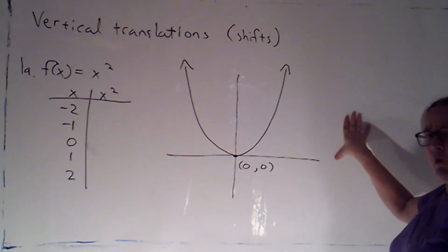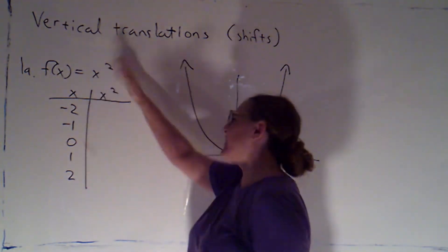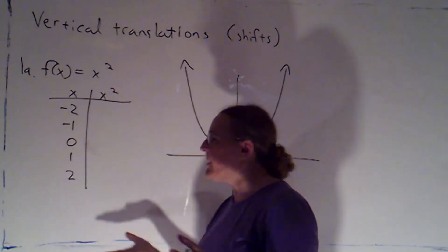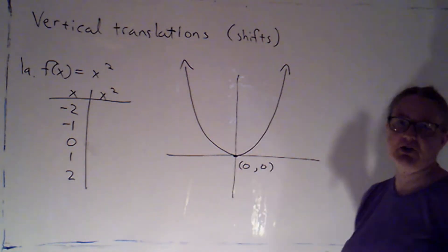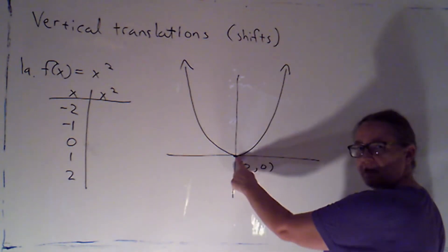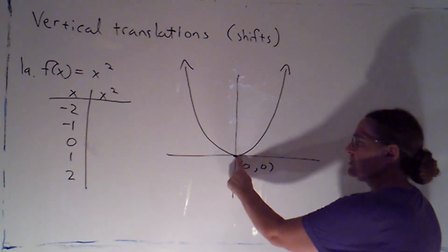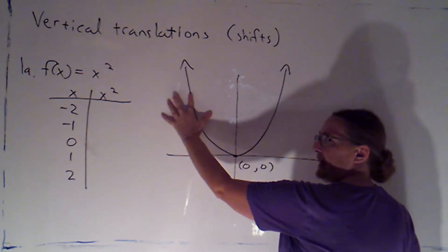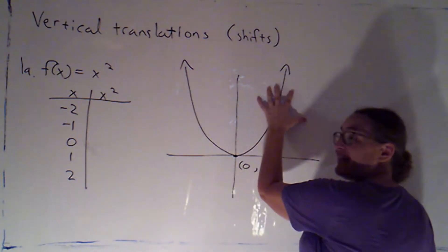One thing that's important is when we were creating this, I said I'm going to try a couple of negatives and zero and a couple of positives. And it turns out that was a good choice for this function because this function has its vertex at the origin. So we captured some information about the left side, the middle, and the right side.